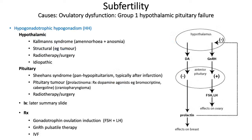Group 1 — hypothalamus and pituitary — can be further categorised into hypogonadotrophic hypogonadism (HH) and hypothalamic amenorrhea. HH results from hypothalamic or pituitary failure or dysfunction, ultimately resulting in decreased FSH and LH secretion. Hypothalamic causes include Kallmann syndrome — amenorrhea and anosmia — structural causes such as a tumour, radiotherapy or surgery to that area, and idiopathic causes.